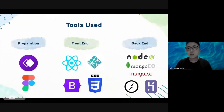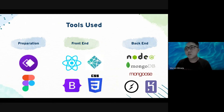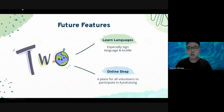To create the app, we used several tools. For preparation, we used Whimsical to create ERD and charts, and Figma to create the wireframe and prototype. For the front end, we use React as the main tool, Bootstrap and CSS to design the app, and Netlify to deploy it. For the back end, we use Node.js as the main tool, MongoDB as the database, Mongoose to connect with the database, Socket.io for the chat feature, and Heroku to deploy the backend server.